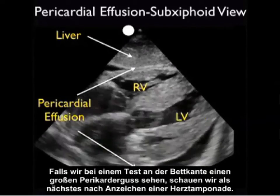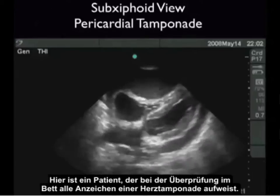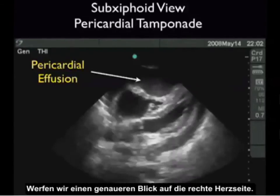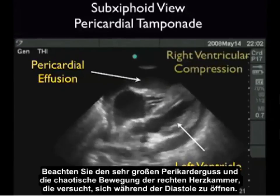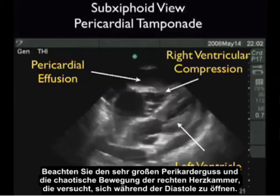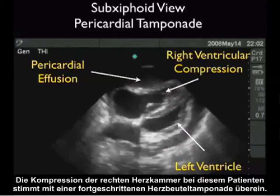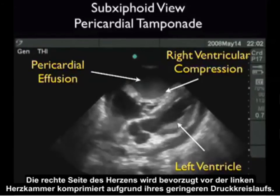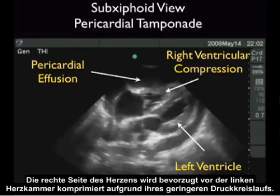If we see a large pericardial effusion on bedside echo, our next move is to look for signs of cardiac tamponade. Here's a patient who manifests all the signs of cardiac tamponade on bedside echo. Let's look specifically at the right side of the heart. Notice the very large pericardial effusion and note the chaotic movement of the right ventricle as it struggles to open during diastole. The compression of the right ventricle in this patient is consistent with advanced cardiac tamponade. The right side of the heart is preferentially compressed before the left ventricle due to its lower pressure circuit.